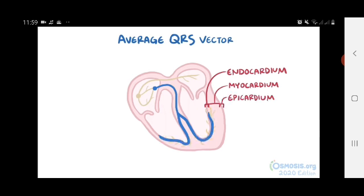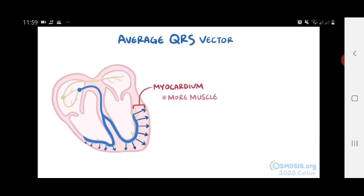So the Purkinje fibers initiate depolarization vectors that travel directly outward, starting in the endocardium, going through the myocardium, and ending in the epicardium. And because they transmit a depolarization wave so quickly, they all fire off pretty much in unison. Also the more muscle tissue in the myocardial layer that a vector travels through, the larger the size of the vector.